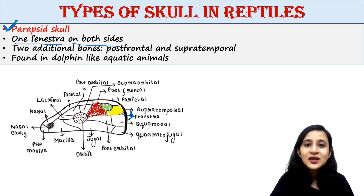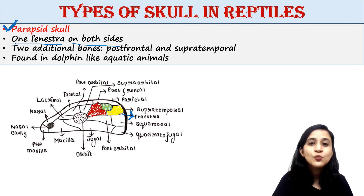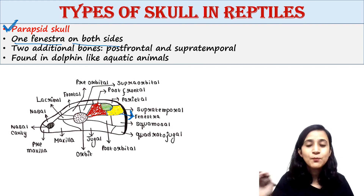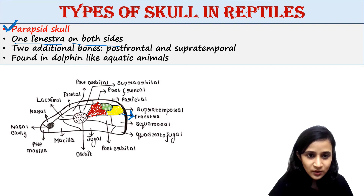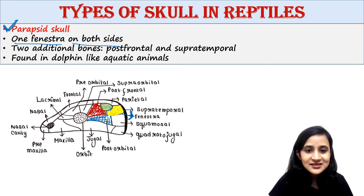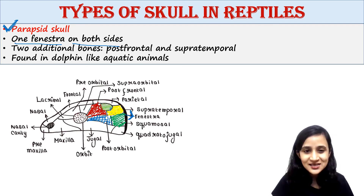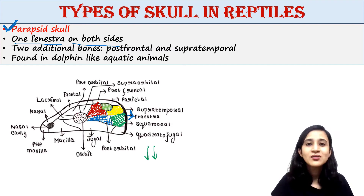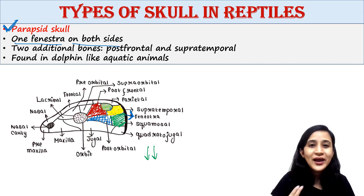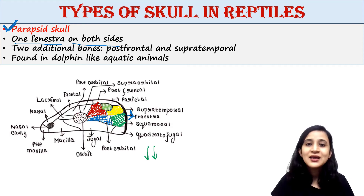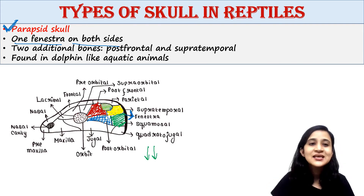These two extra bones are post-frontal and supratemporal — the yellow one is the supratemporal. These two extra bones push the post-orbital and squamosal bones toward the lower side. Parapsid skull was found in dolphin-like aquatic animals.